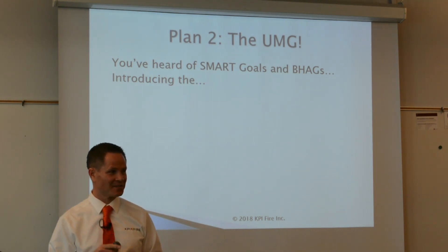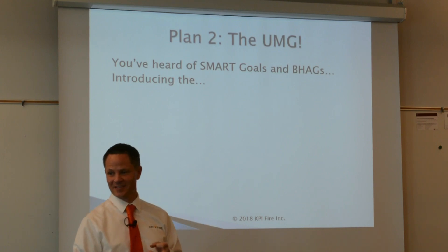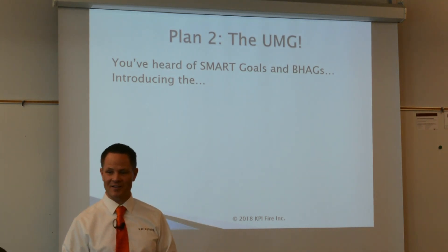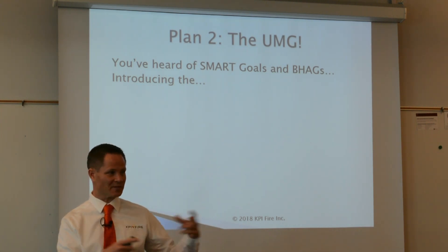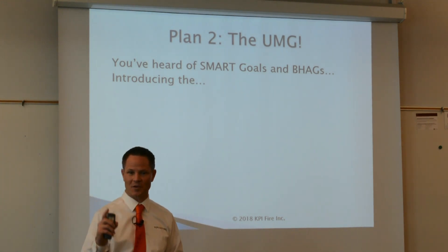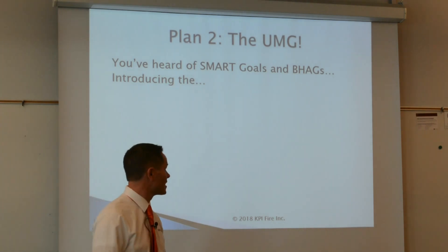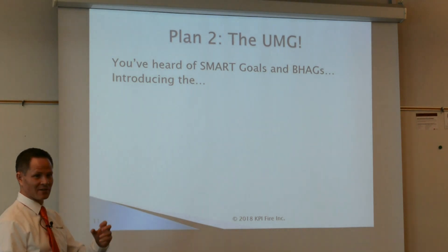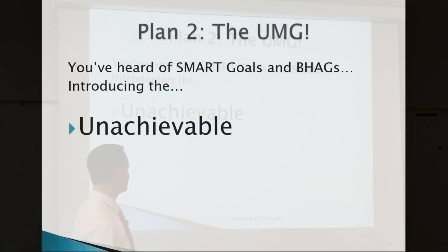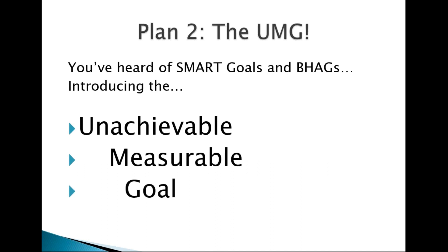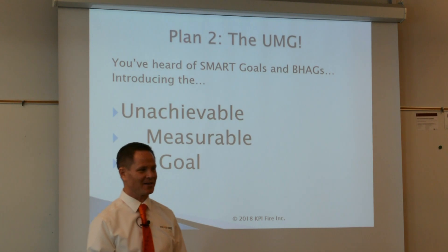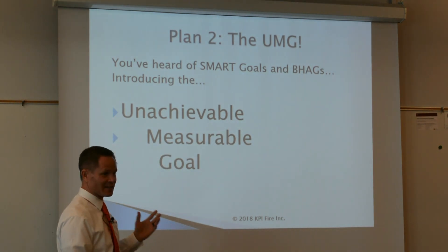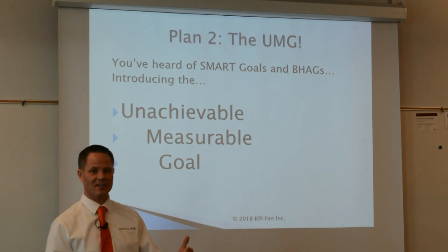Step two: come up with an objective. You know what SMART goals are — Specific, Measurable, Attainable, Relevant to your strategy, and Time-bound. You also know BHAGs — Big Hairy Audacious Goals. I'm introducing a simplified term today: UMG — an Unachievable but Measurable Goal. You have to come up with something so hard that you can't do it doing things the way you do them today.